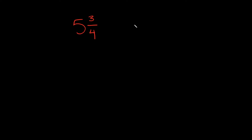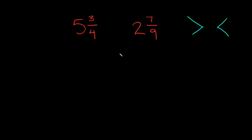But if you're good, let's jump into this first example: five and three-fourths and two and seven-ninths. The two inequality symbols I'm going to use are the greater than symbol and the less than symbol. When you're comparing mixed fractions, it's actually kind of easy because you don't really even have to look at the fractions — all you really have to do is pay attention to the whole numbers.